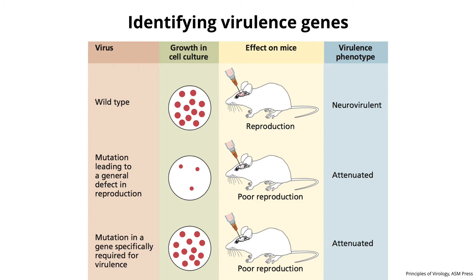Here's an experiment identifying viral virulence genes. Take a wild-type virus — it grows well in cell culture, makes lots of plaques, and when put in the brain of a mouse, replicates, destroys neural cells, and is neurovirulent, causing paralysis or death. We make mutations in the viral genome. If a mutation makes the virus grow poorly in cell culture and also not cause disease in an animal, that's not interesting — all you've done is impair general replication. What we want are genes that have no effect in cell culture but are specifically needed for making disease in an animal.